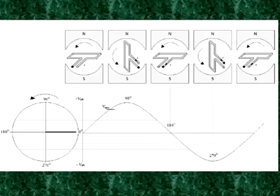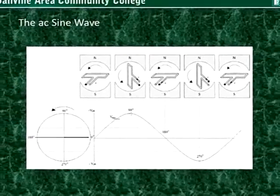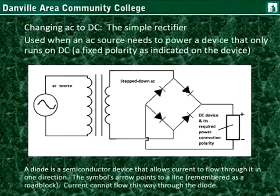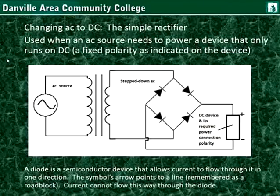If you've ever heard a transformer hum, or a power adapter hum, or even a humming on the speaker of a radio, you understand the 60 hertz — it is bleeding through the amplifier and into the speaker from the power supply. Modern electronic devices such as computers, televisions, radios, and even cell phone chargers cannot run on alternating current.